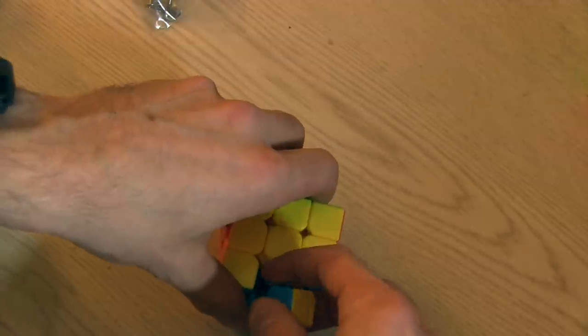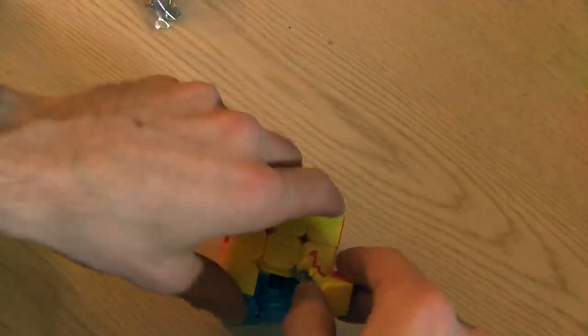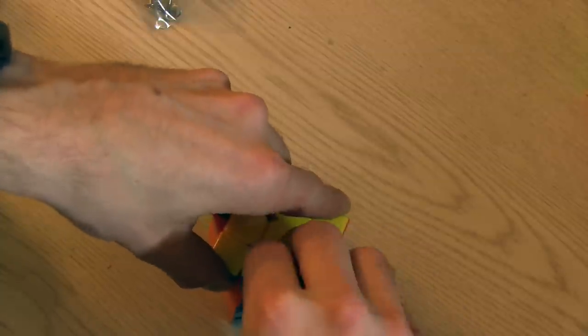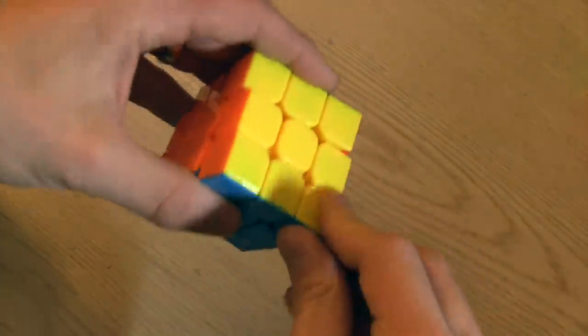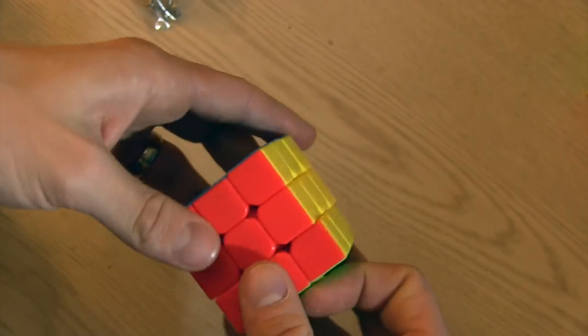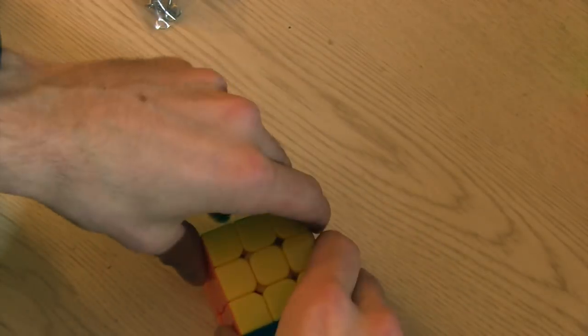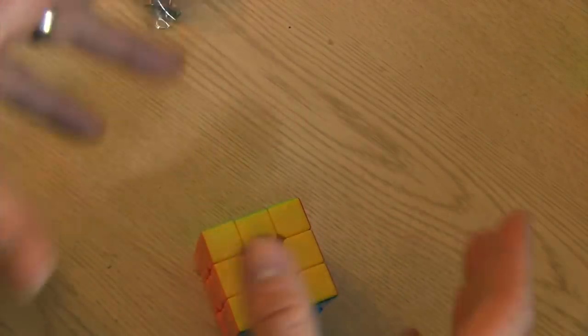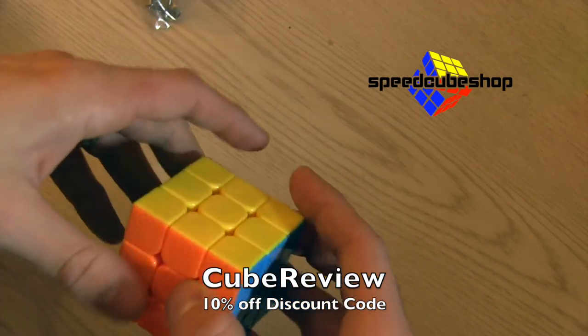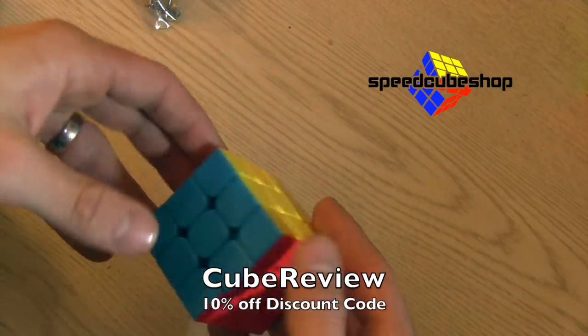And for those of you who are just getting into cubing and maybe never experienced the Aolong V1, you probably heard a lot of rumors about how amazing it was, but how bad the corner twists are. It is true. And if you want to try it out, you can always just grab a mini one. So you can get this and all the other things I'm showing at speedcubeshop.com. I'll have a link in the description. Make sure to use discount code cubereview. You can save 10% on your order.